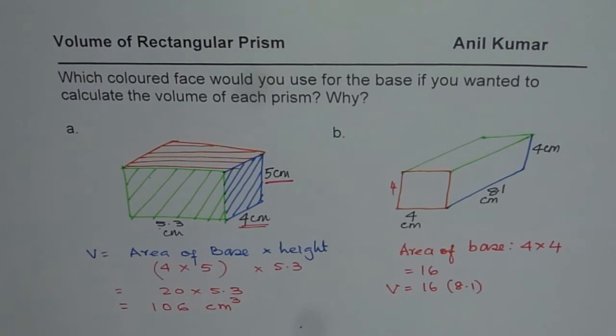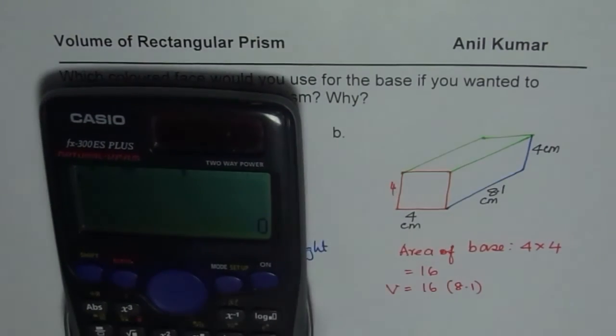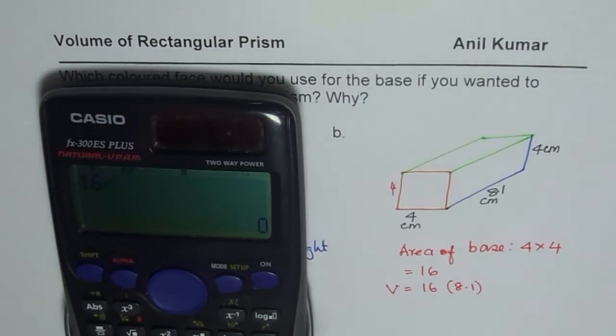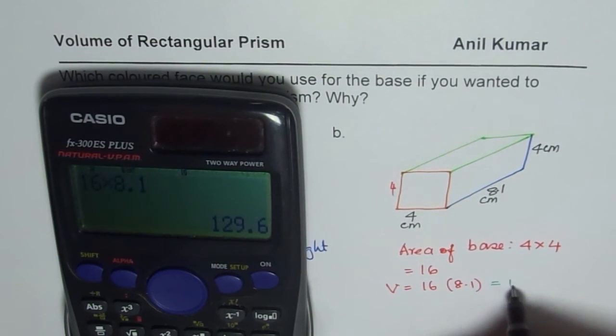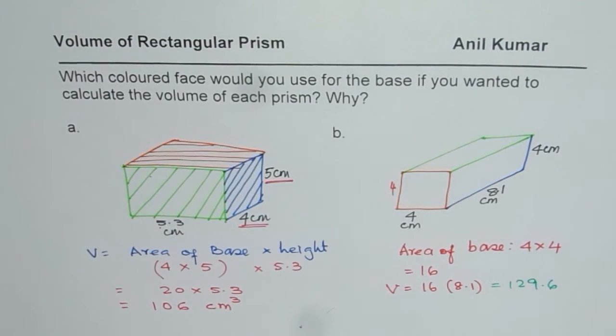So in this case, let us do our multiplication. Or you could do with calculator also. 16 times 8.1 and you can write your answer as equal to 129.6. So that is how you could do it.